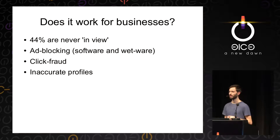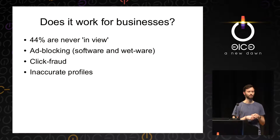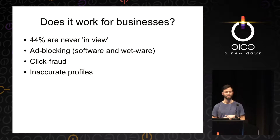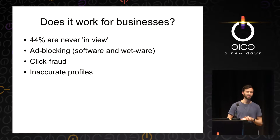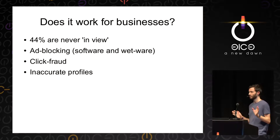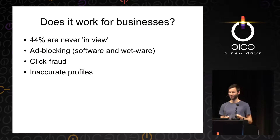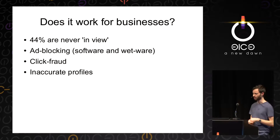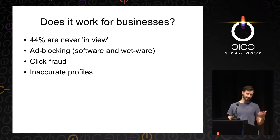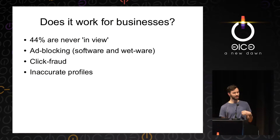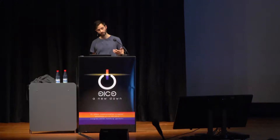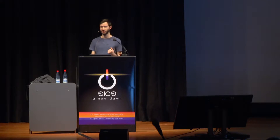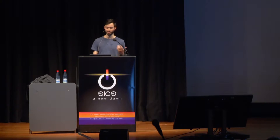I logged on to the ad preference manager of an ad network and looked at my own profile. They think I am a father with two kids and that I have a pet dog — as far as I know, neither of those things are true. So any targeting aimed at me on that basis is unlikely to be correct. Maybe in some cases the adverts that reach people are relevant to them, and the theory is this is good for consumers because they see more relevant ads.